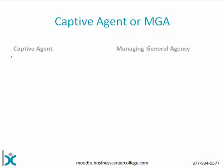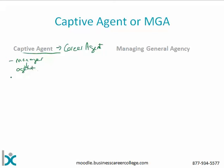We'll start with the distinction between the captive agency and the managing general agency. Captive agents are also sometimes referred to as career agents — the two terms are used interchangeably. A captive or career agent is almost like an employee; they're not necessarily an employee, but they basically have a manager with a linear relationship. The manager has a relationship with the agent, and they would typically have one primary product line associated directly with the company their manager works for.